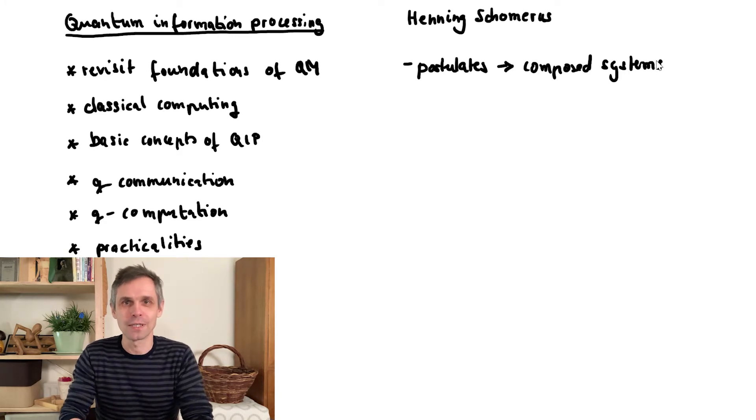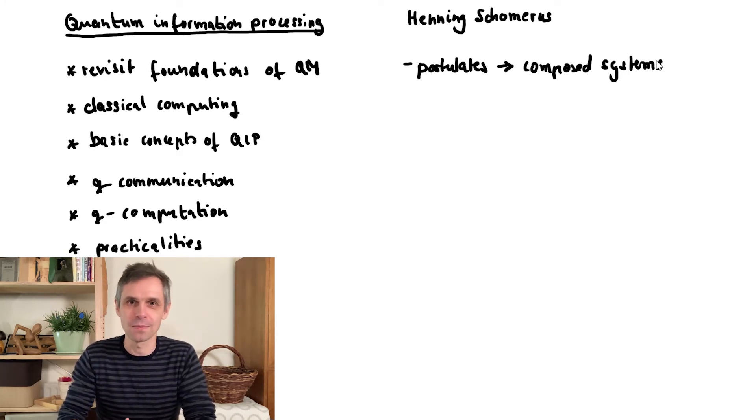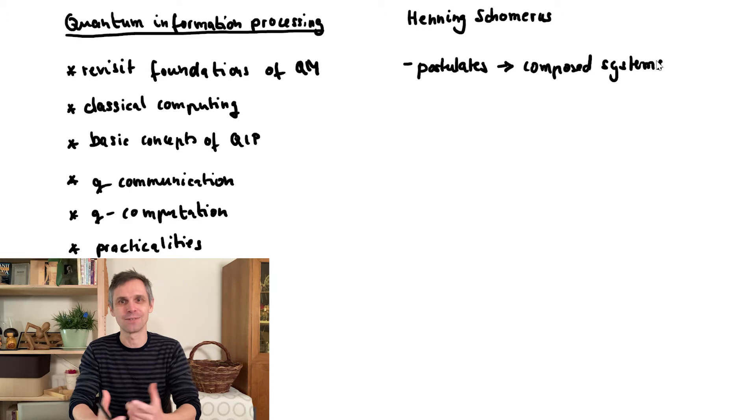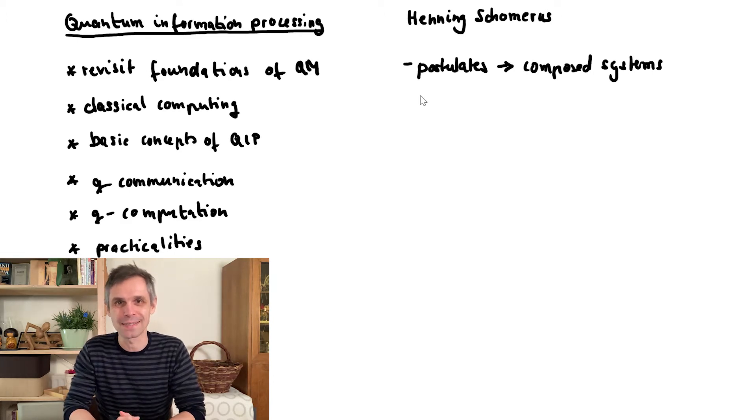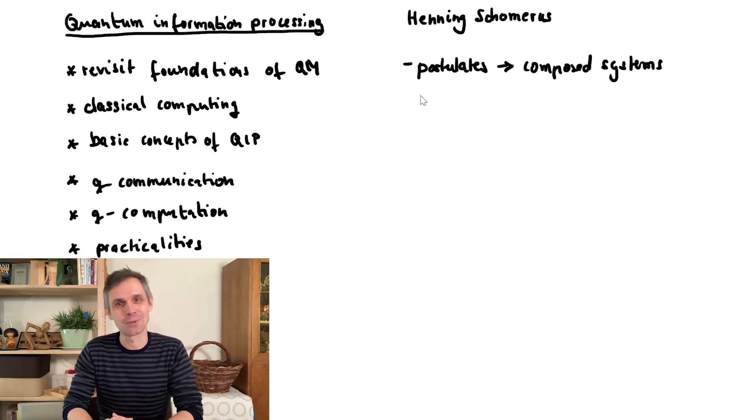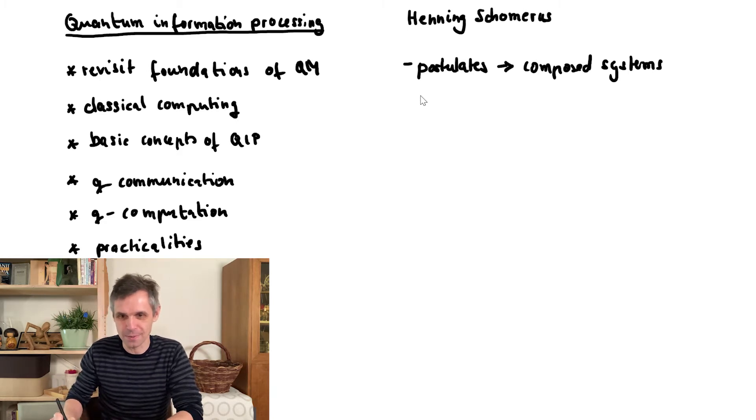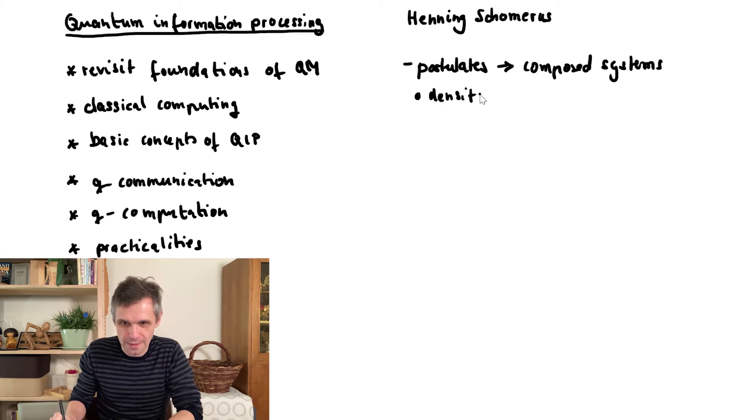And for instance, one of the questions that you can have is that you have a complex quantum system, but you can only access information about one of its parts or some of its parts. So how do you actually describe such systems? And there is this concept of a density matrix. So we are going to discuss the concept of a density matrix that is exactly achieving this.